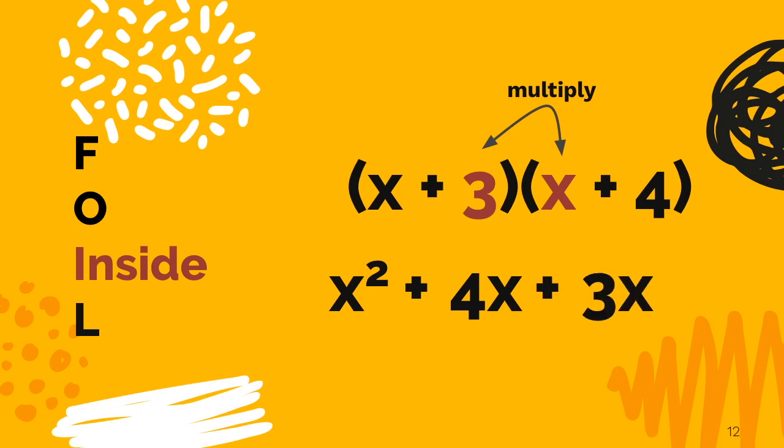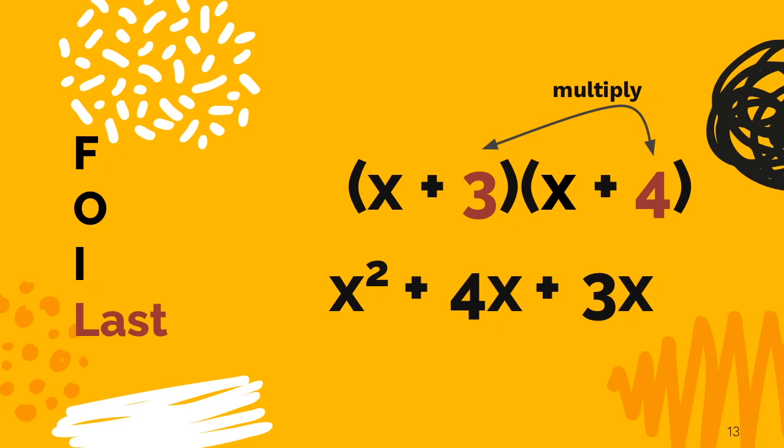Now that we've taken care of both the outside and the inside, we have to move on to the letter L, which stands for last. We need to remember to multiply the 3 and the 4. You get 12 when you take 3 times 4.